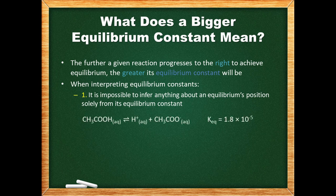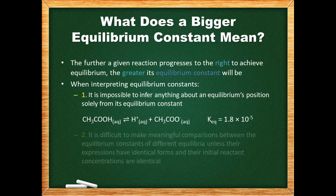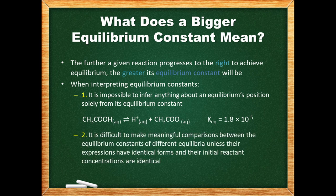Let's say we have an equilibrium and the initial concentration of acetic acid is 1.0 moles per liter. If we lower the concentration to 1×10⁻⁶ moles per liter, there will be a larger yield at equilibrium as the system shifts to restore equilibrium. Clearly, the equilibrium position must depend on the initial reactant concentrations as well as the equilibrium constant. Even with the same initial reactant concentrations for two different reactions, it is still very difficult to make meaningful comparisons between their equilibrium constants unless their expressions have identical forms. Even when they have the same equilibrium constant, they may have radically different percent yields.